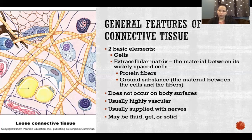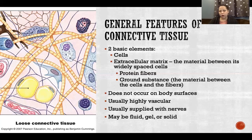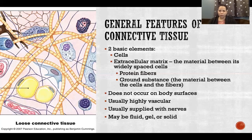Connective tissue is also usually supplied with nerves, though there are exceptions. Cartilage, for example, doesn't have a very significant nerve supply. So if you tear a meniscus or have a cartilage injury, the pain that results is really the pain of the surrounding tissues affected by the lack of that cartilage working correctly — from instability or forces applied through the joint capsule. We don't actually feel the cartilage itself. For the most part, the rest of our connective tissues have an abundant nerve supply.